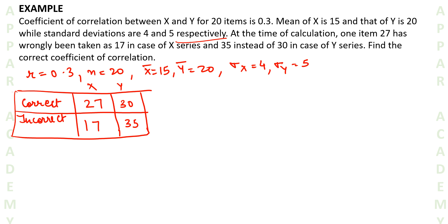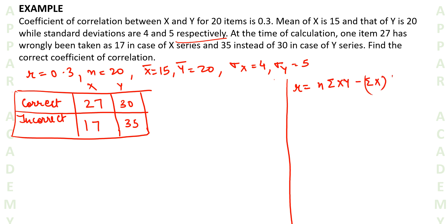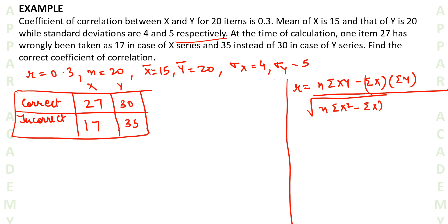Now we need to correct this and find the correct coefficient of correlation without having the actual data. In order to find the correct coefficient of correlation, the formula is: r equals n·Σxy minus Σx·Σy, upon the square root of n·Σx² minus (Σx)², multiplied by n·Σy² minus (Σy)².